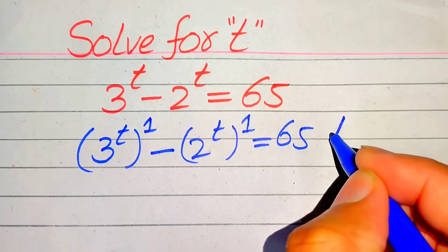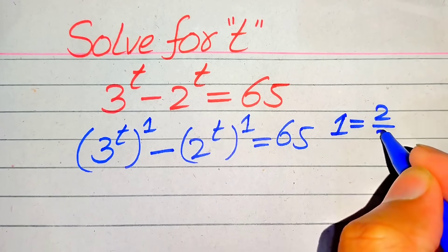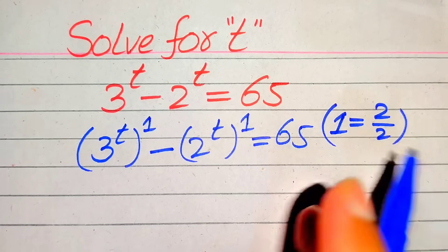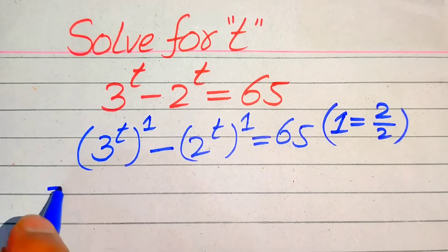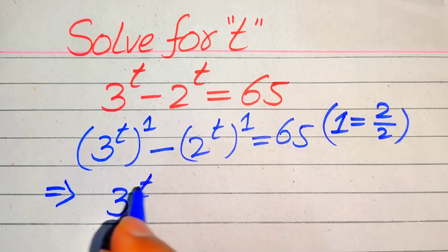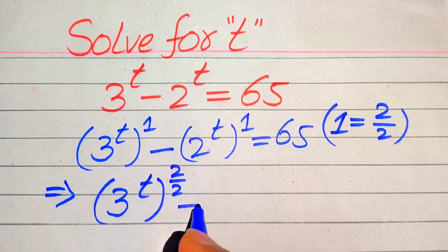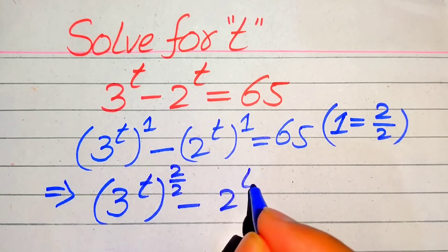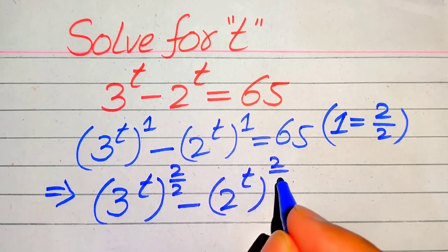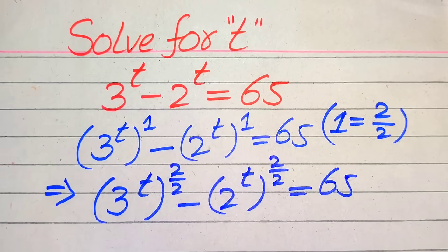Now we write this 1 as 2 divided by 2, so we replace both of these 1s with 2 over 2. After that we write this equation as 3 to the power of t with its whole power as 2 over 2, minus 2 to the power of t with its whole power as 2 over 2, equals 65.